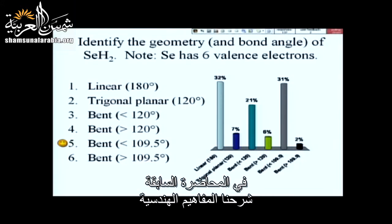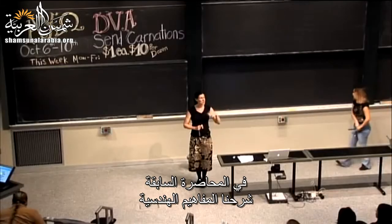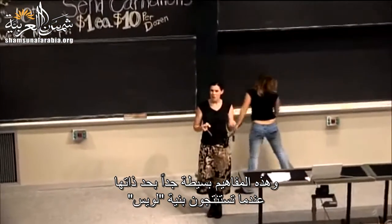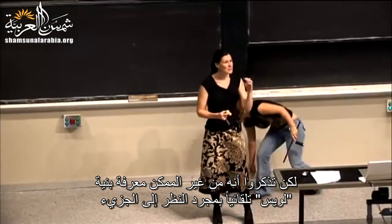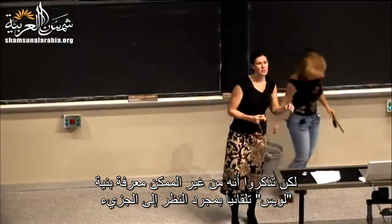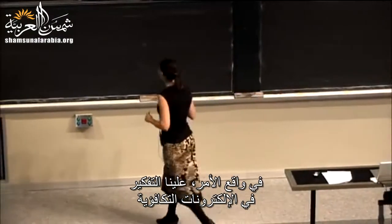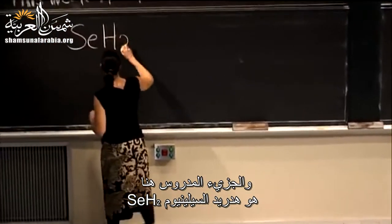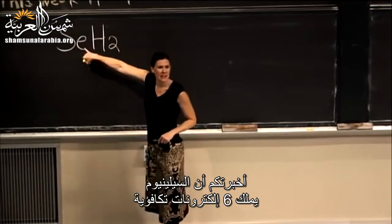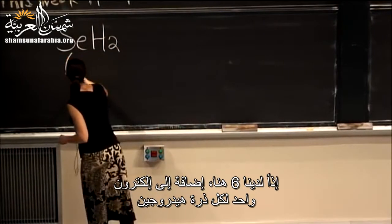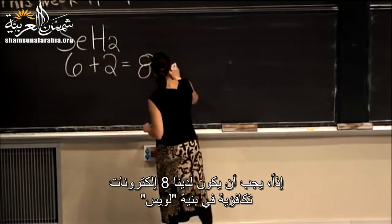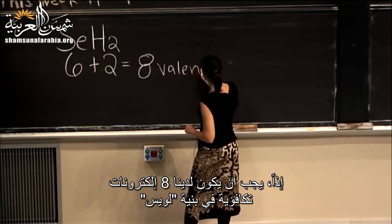Let's go over the correct answer. Thirty-one percent of us got it right. This is not the kind of percentages we're looking for. In class on Monday, we did go over the geometries, and the geometries themselves are very straightforward once you know what the Lewis structure is. But you can't just always look at a molecule and automatically know the Lewis structure — we actually need to think about those valence electrons. Here we're dealing with selenium hydride, SeH2. Selenium has six valence electrons, plus one for each hydrogen, giving us eight valence electrons in our Lewis structure.